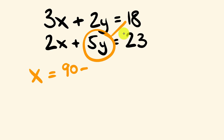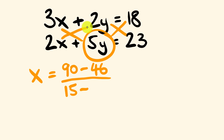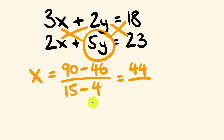And from this, we're going to subtract — we do the opposite cross multiplication. That is 2 multiplied by 23, which is 46. Now we set up the denominator: we have 5 multiplied by the coefficient of x in the first equation, which is 3 times 5, equal to 15. And from that we're going to take away 2 multiplied by 2, which is equal to 4.